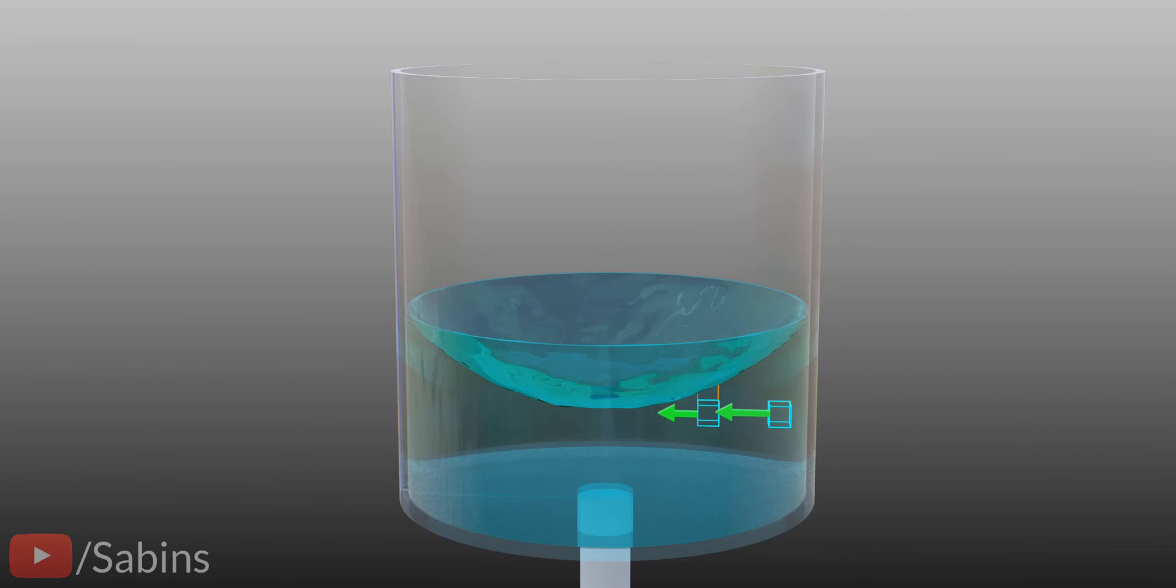The pressure difference caused by the water level's height disparity generates that centripetal force. The fluid particles at the outer radius obviously need more centripetal force. To satisfy this increasing centripetal force requirement, the fluid surface has to form a curved shape, rather than a straight line.